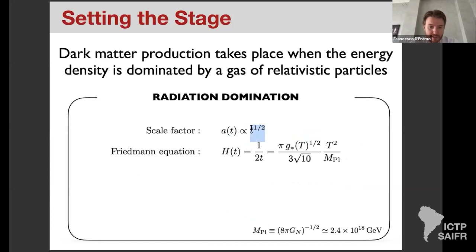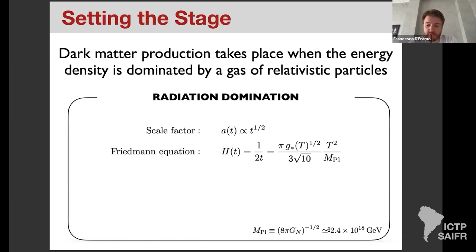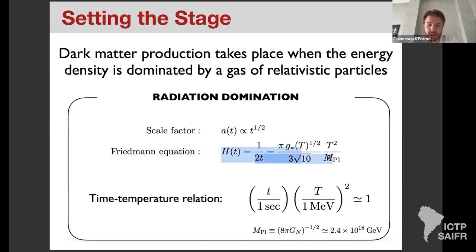Another useful notation review: the scale factor is a(t), t is cosmic time, H is the Hubble parameter. For a radiation-dominated universe, H(t) = 1/(2t). Using the Friedmann equation during radiation domination, H = (π²/90)^{1/2} g★^{1/2} T²/M_Pl, where M_Pl is the reduced Planck mass — defined with an extra 8π factor — with numerical value approximately 10¹⁸ GeV.